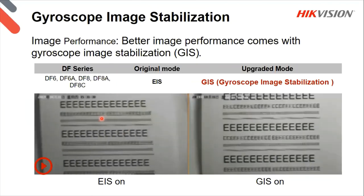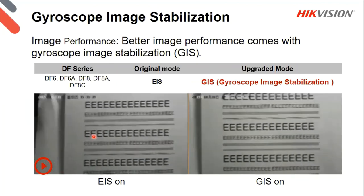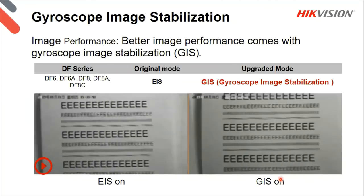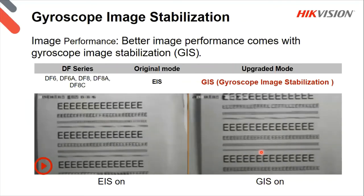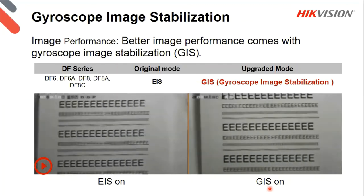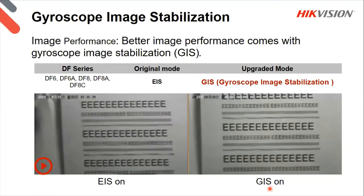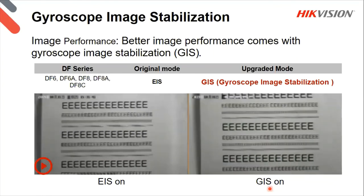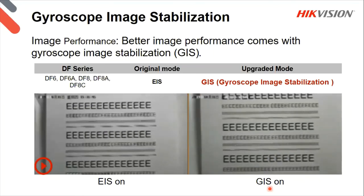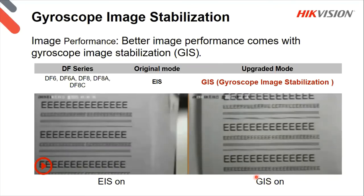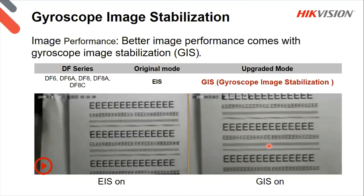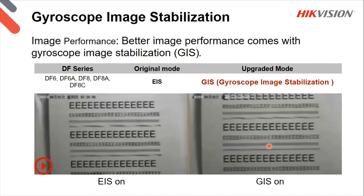The gyroscope image stabilization: previously with electronic image stabilizer it would stabilize the video somewhat, but now with hardware built in the stabilization is much better. Where would you use this? Typically a camera mounted on a very high pole with serious winds blowing — shaking the pole, blurring the image. That's where the EIS or GIS comes in. The hardware side is obviously better. This is now in the DF series domes, stabilizing your image much more so you can keep focus on the objects you need to watch.